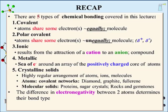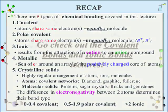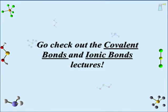The difference in electronegativity between two atoms determines their bond type. A difference between 0 and 0.4 is covalent; a difference between 0.5 and 1.9 yields a polar covalent bond; if the difference is greater than 2.0, the bond is ionic. That concludes the overview of bonding. Head out to the individual lectures on the bond types to expand your understanding.